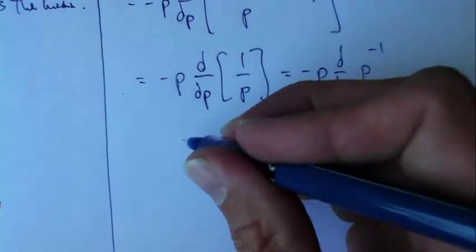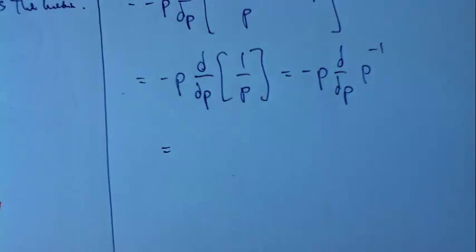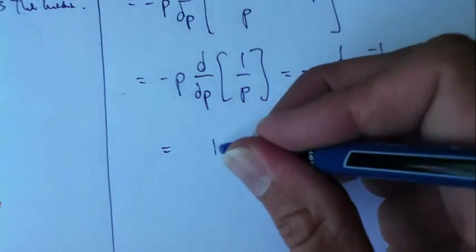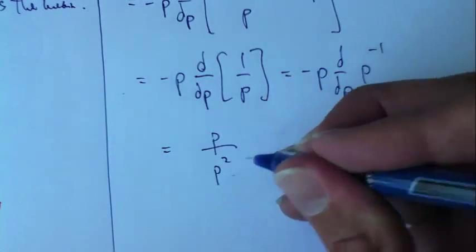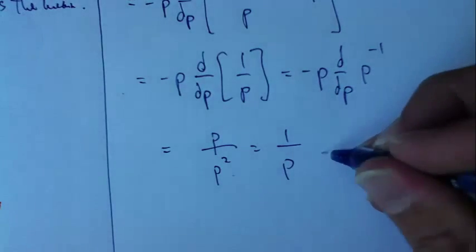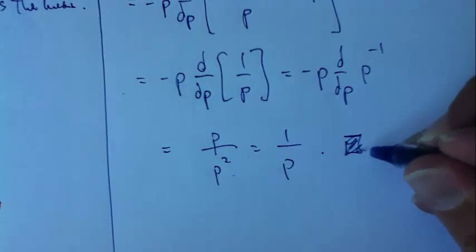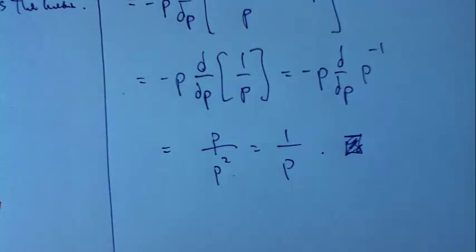Now all of this is just the same as, if I take the derivative of p to the negative 1, negative 1 comes down, I get p over p squared, which is just 1 over p. Very good. That's the expected value of the geometric. It's 1 over p.